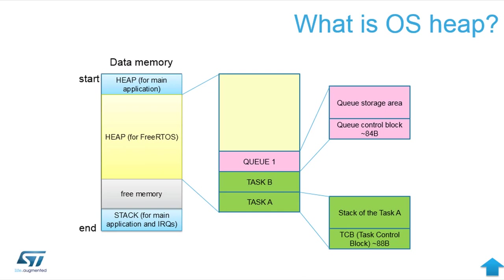When you create a second task B, the RTOS takes another part of memory from its heap and creates its own PCB and stack for task B. Who decides how big a stack to allocate? You, the programmer. When you compile your application, the compiler and linker can give you a call tree with an estimated stack depth. You can look in the map file listing the call tree and try to deduce the needed stack size, though you must account for recursive functions where you don't know how deep the stack will go.